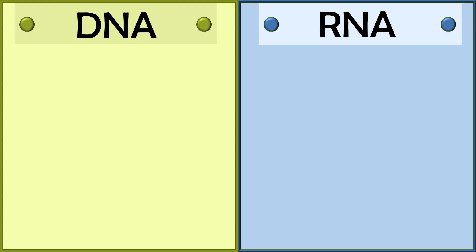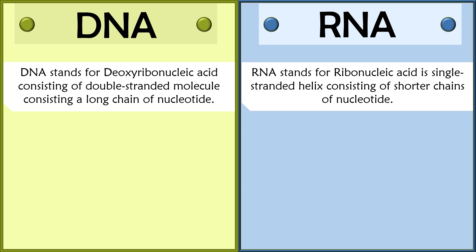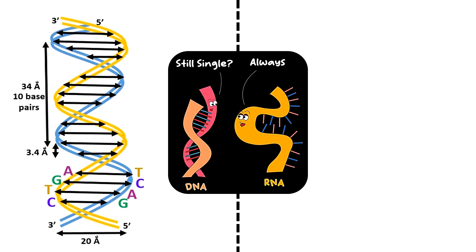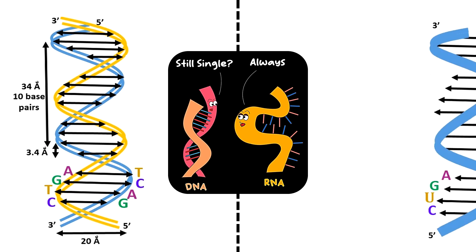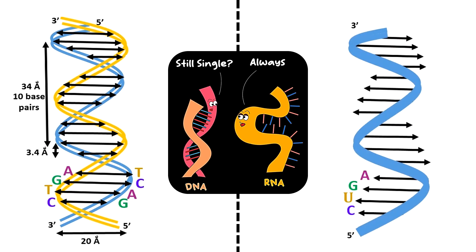Now let us understand some key differences between DNA and RNA with the help of a comparison chart. DNA stands for deoxyribonucleic acid. It is a double-stranded helical structure which consists of a long chain of nucleotides. On the other side, RNA stands for ribonucleic acid. It is a single-stranded helical structure which consists of shorter chains of nucleotides. As you can see in this diagram, DNA comprises two strands which run anti-parallel to each other, while RNA has only a single helix.